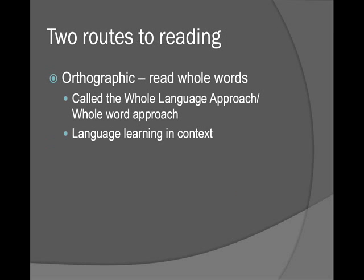There are two routes to reading — unsurprisingly the same as before. The orthographic route is where you read whole words, called the whole language or whole word approach — language learning in context. This works really great especially when words have multiple pronunciations, like 'read' and 'read.' How do you know which one it is? Based on context. It's also great for irregularly pronounced words like 'have,' and very useful for understanding ambiguous words.